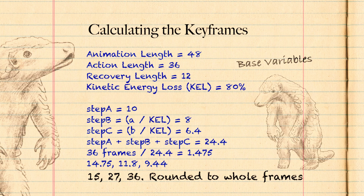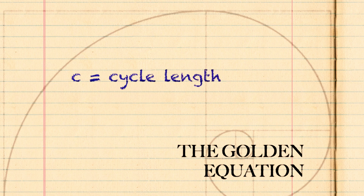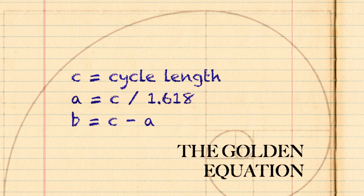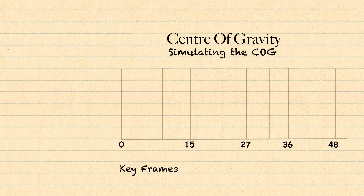Now that we have our key frames, we need to find our lift frames where the foot is rising. For that we turn to the golden ratio. C equals cycle length, A equals C divided by 1.618 (the golden ratio), and B equals C minus A. Applying this golden equation to each one of our key frames, we end up with lift frames on frame 9, 22, and 32.